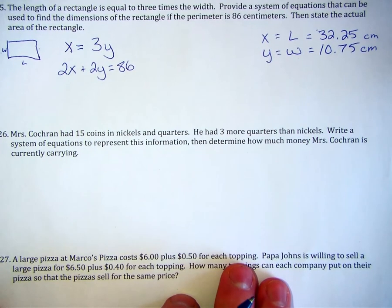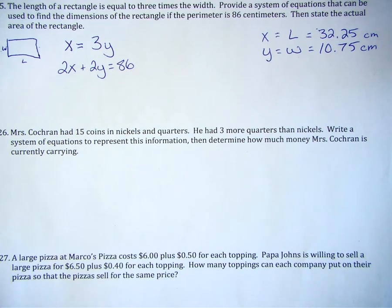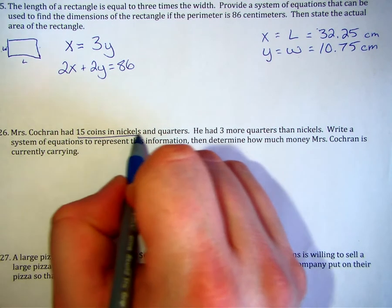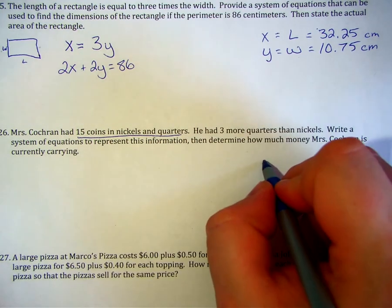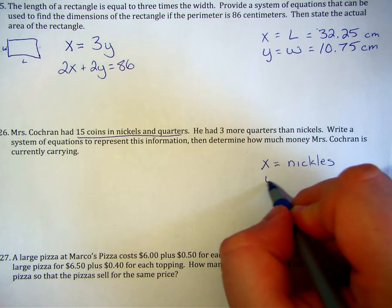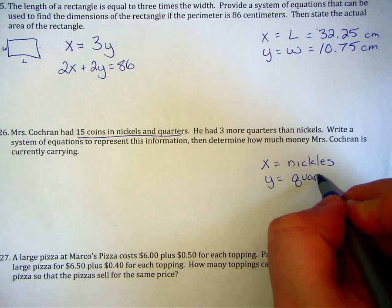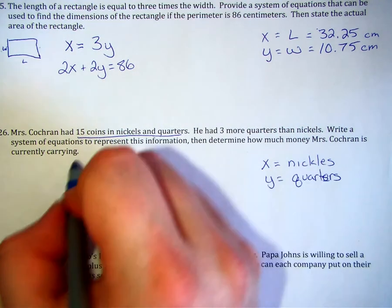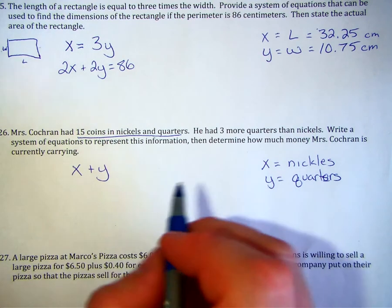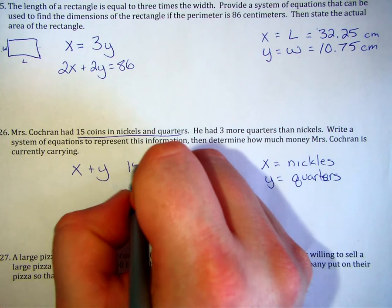Problem number 26. Ms. Cochran had 15 coins in nickels and quarters. We're talking 15 coins in total, not 15 nickels and 15 quarters. He had three more quarters than nickels. So, I know right off the bat that he had 15 total nickels and quarters. We'll go ahead and say x is equal to nickels and y is equal to quarters. If I add the value of nickels and the quantity of quarters, we determine that I have 15 total coins.